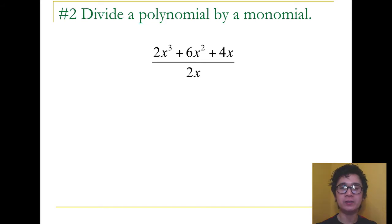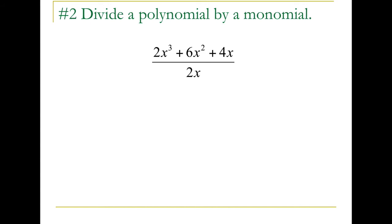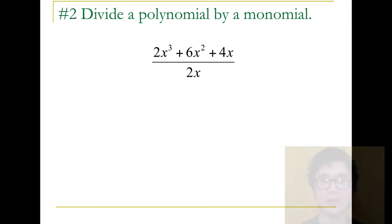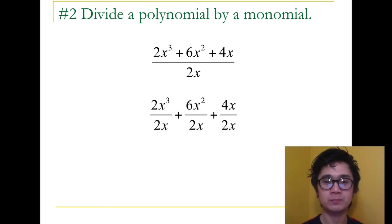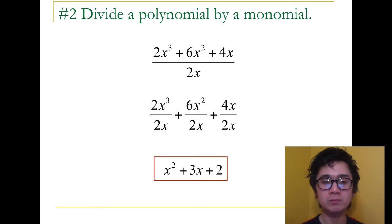Can you divide 2x cubed plus 6x squared plus 4x, all over 2x? And if your answer is correct, your quotient will be x squared plus 3x plus 2.